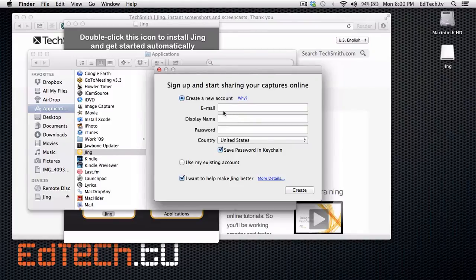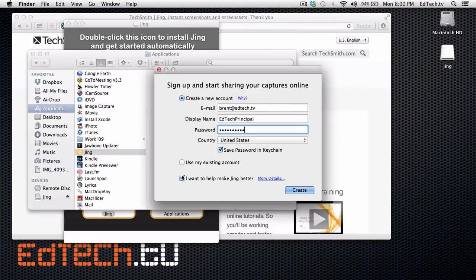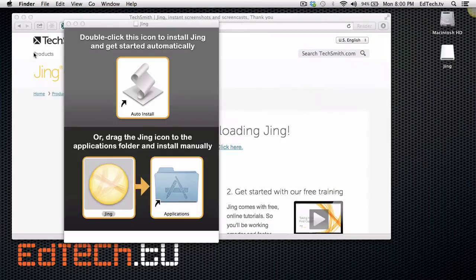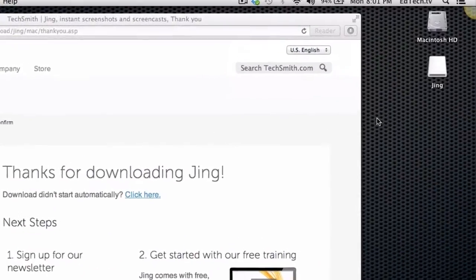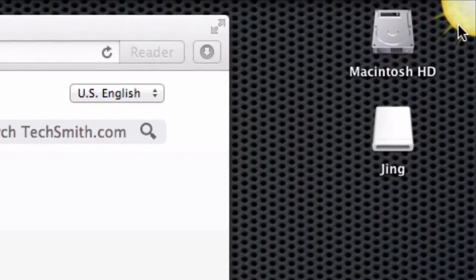So all you do is you click on get started, create an account, and here we have it. So now what you're gonna see in the top right corner is that I have this little sun right here, and that is Jing running and ready to go.